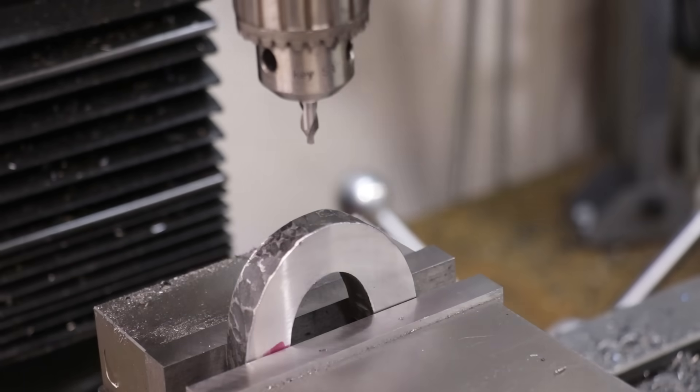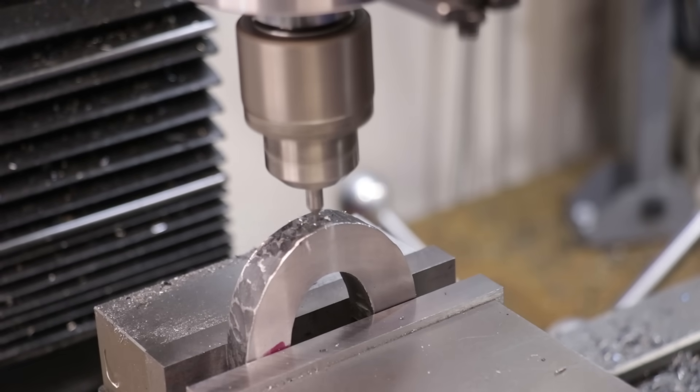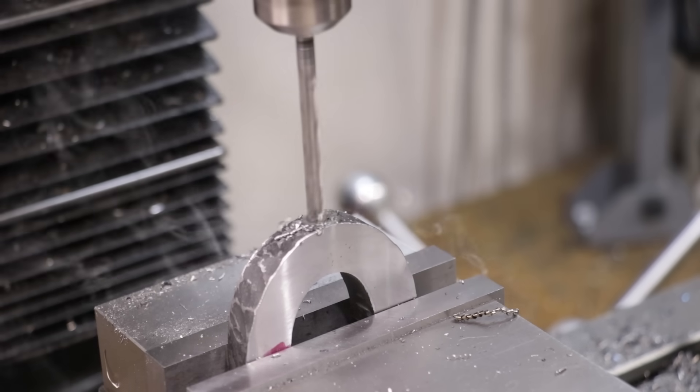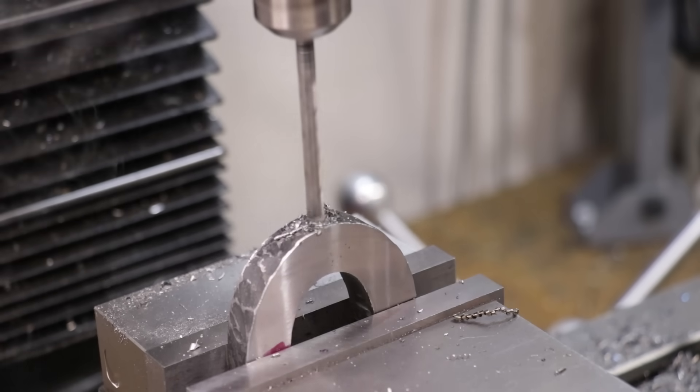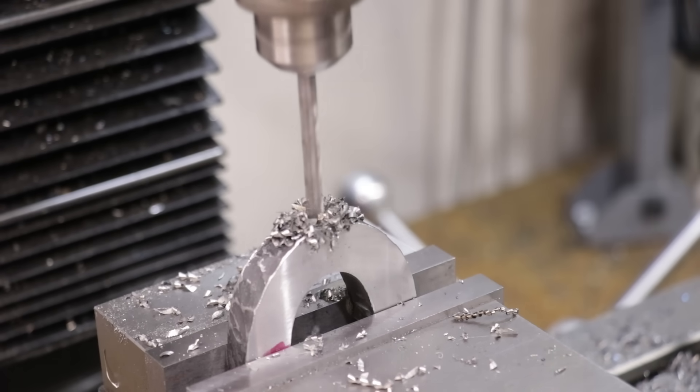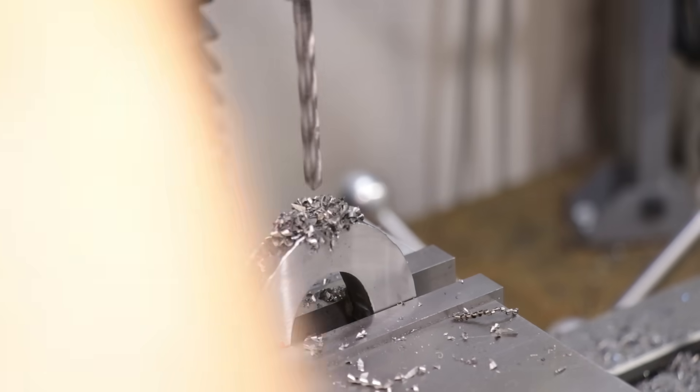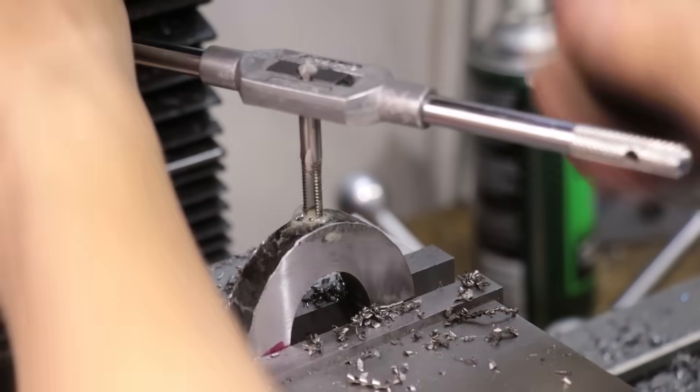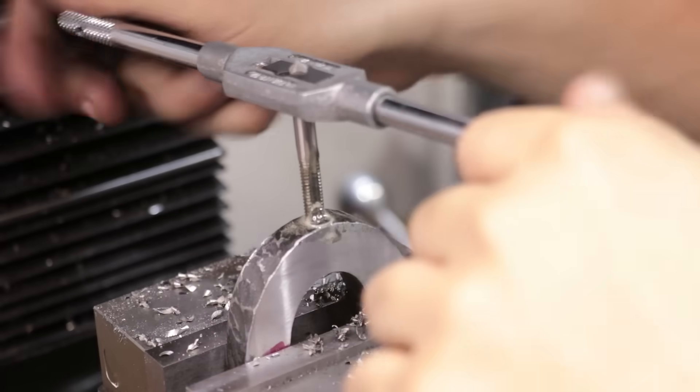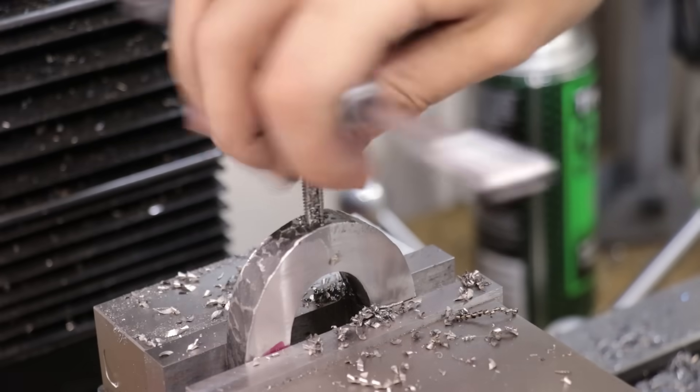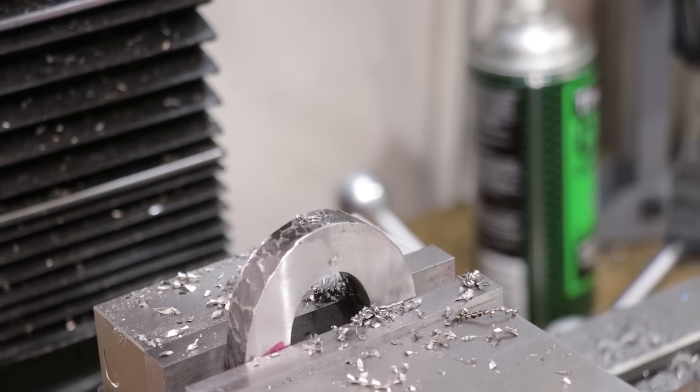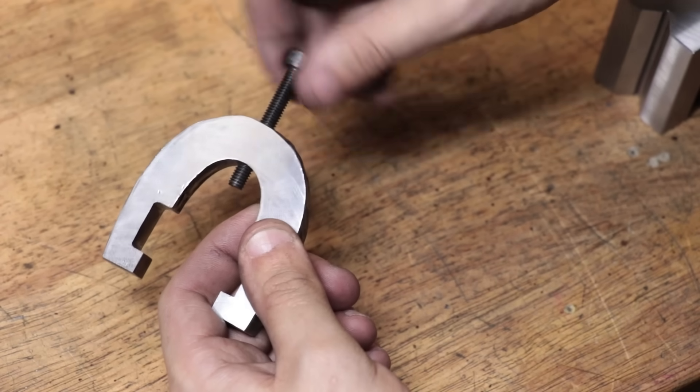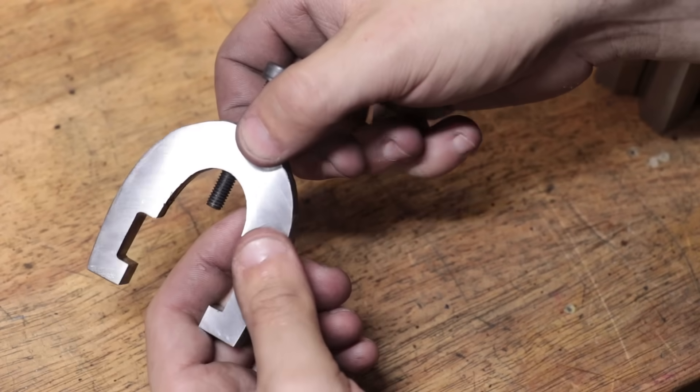The final thing left to do is drill a hole for the clamping screw. I'm using an M6 cap head screw, but if you want to protect the part, you can always put a brass or a nylon cap on the end.